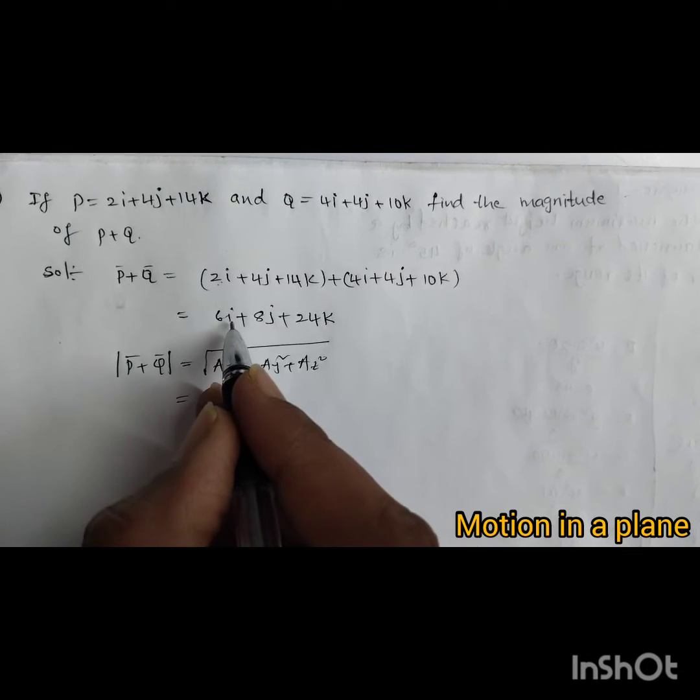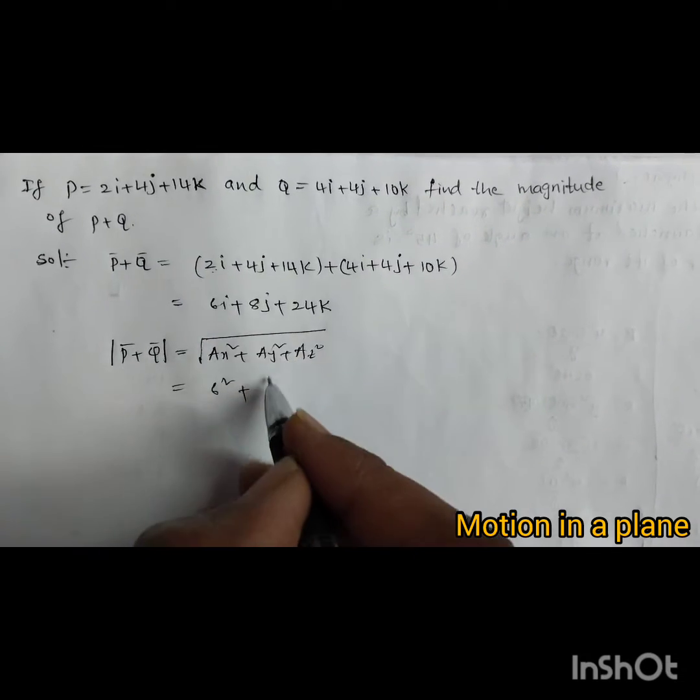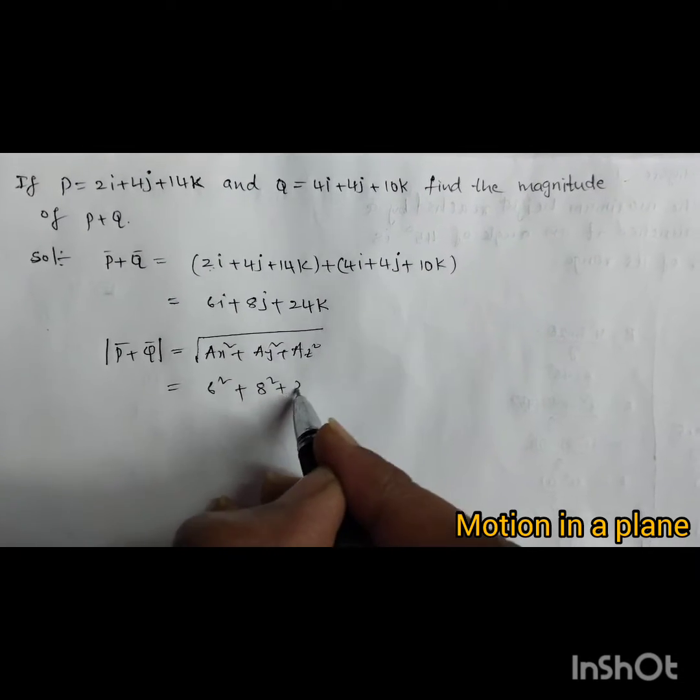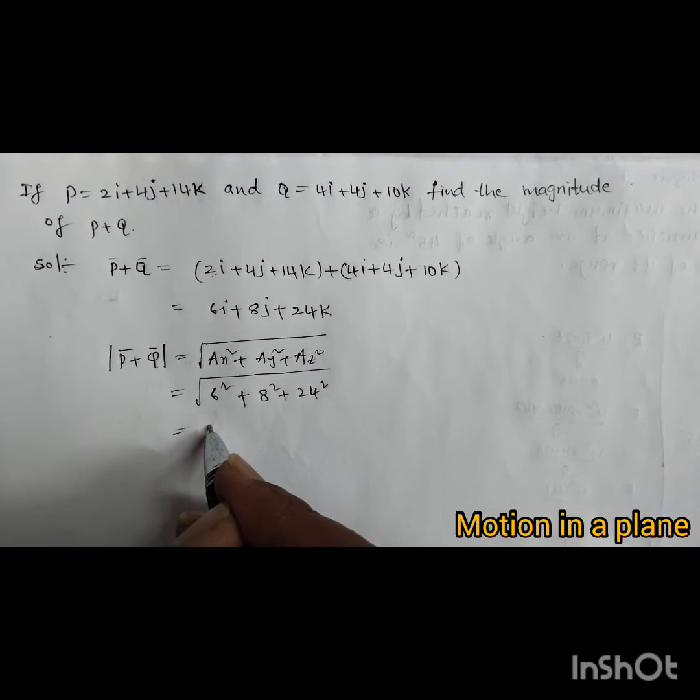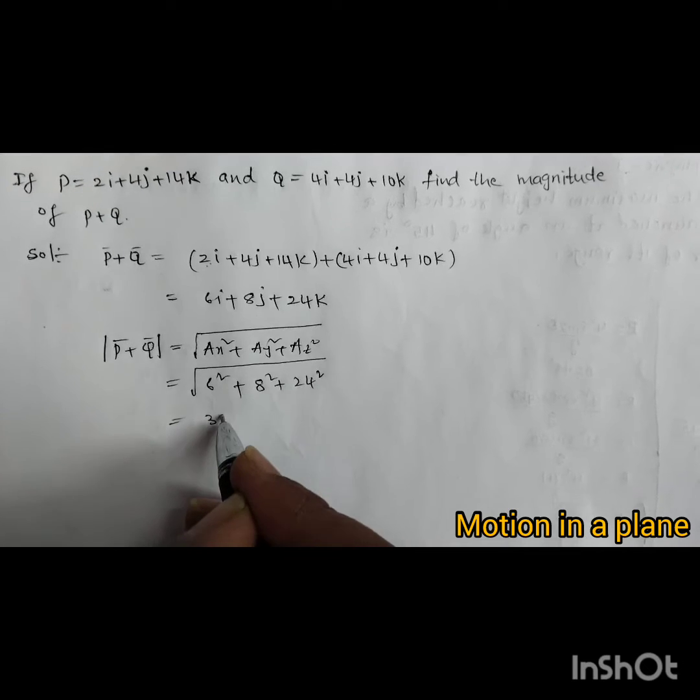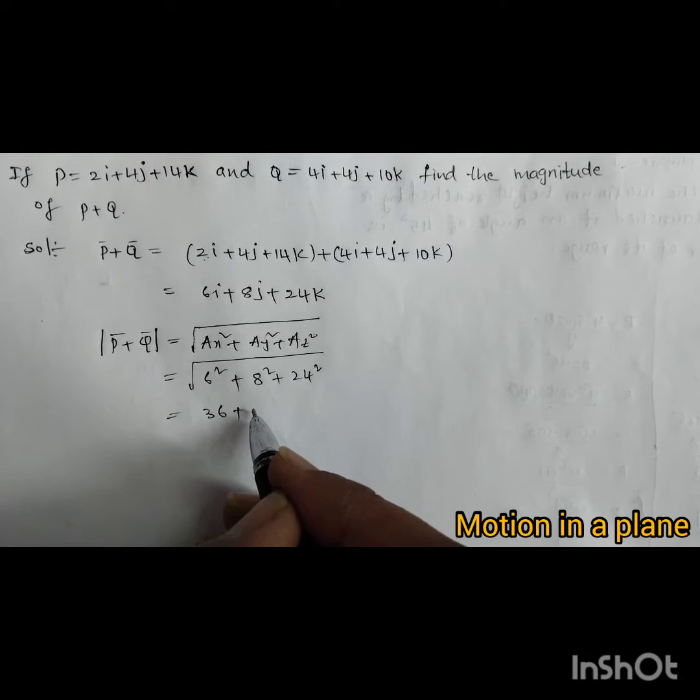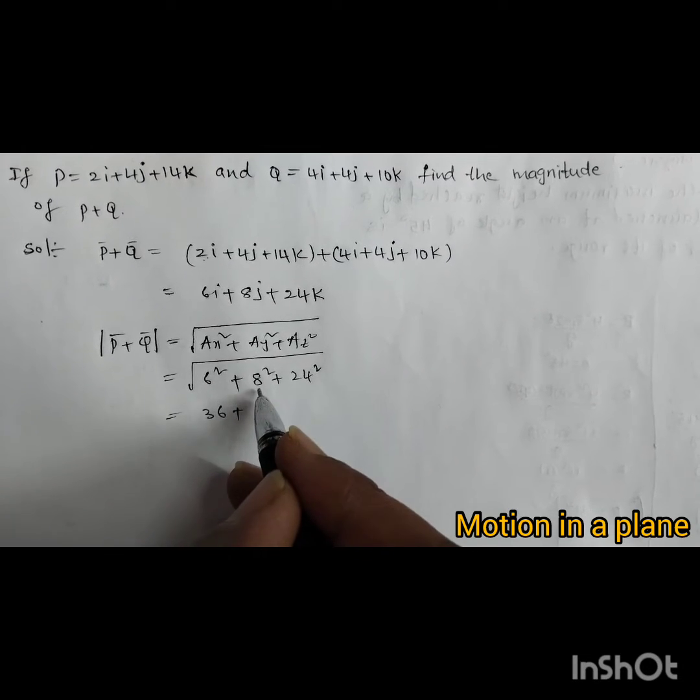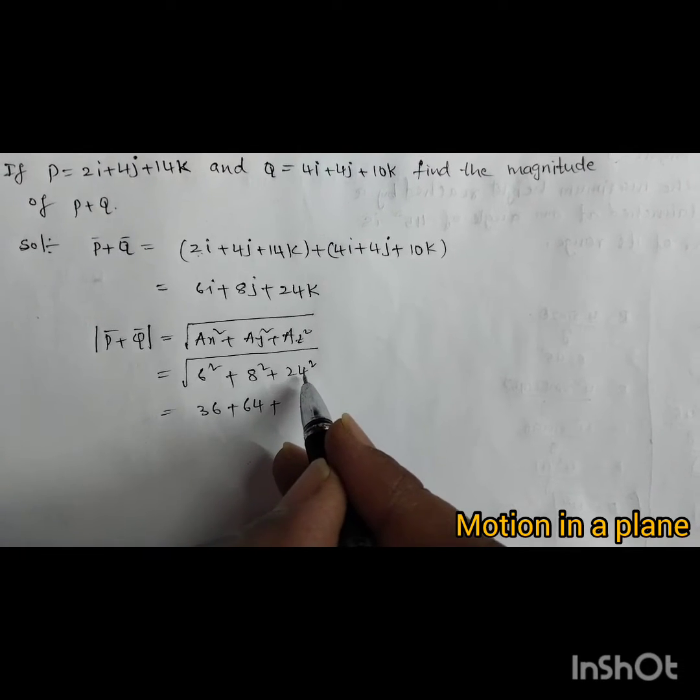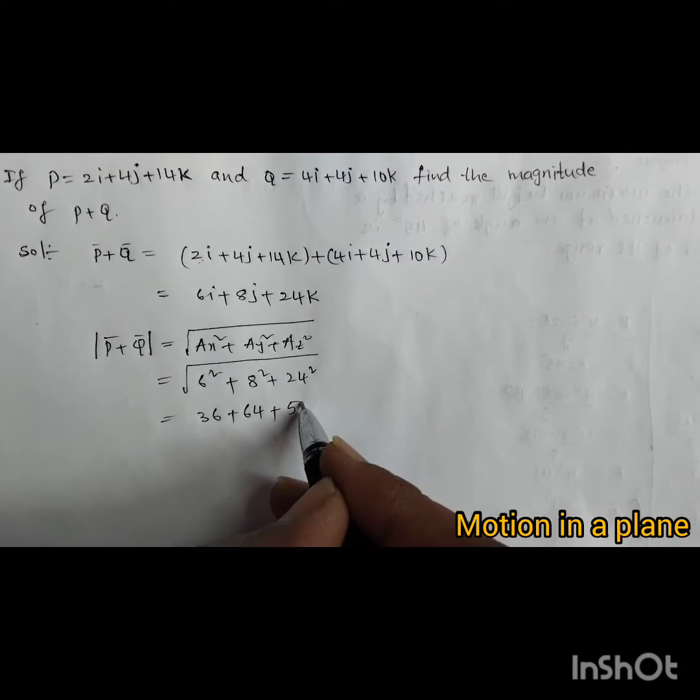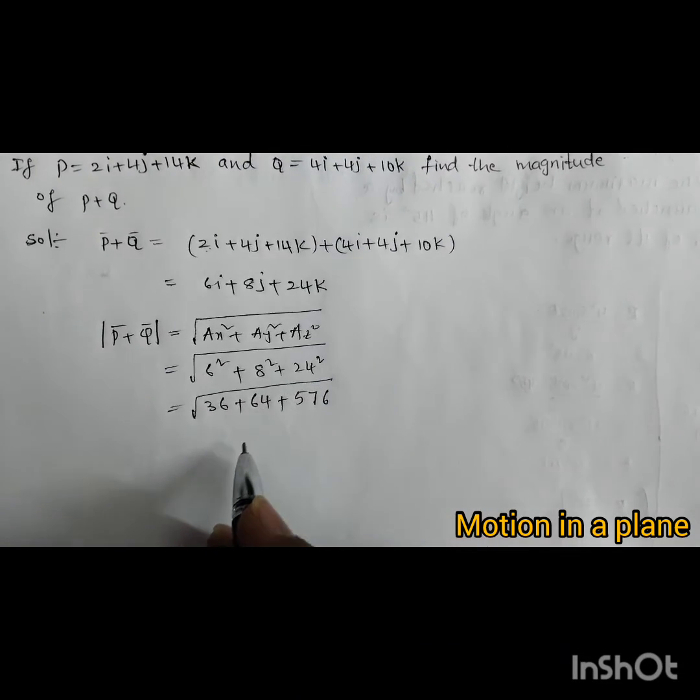x square means i component squared. i component is 6, so 6 squared, plus j component squared, 8 squared, plus 24 squared under root. 6 times 6 is 36, plus 8 times 8 is 64, 24 squared is 576.